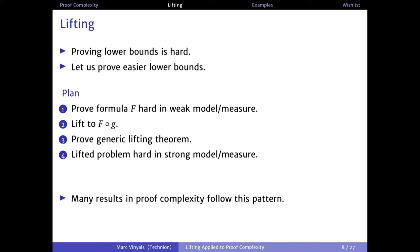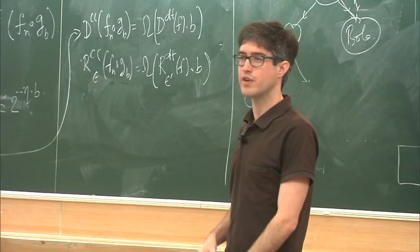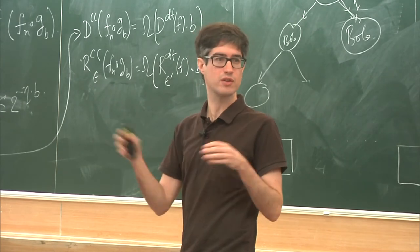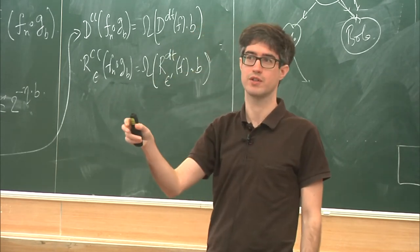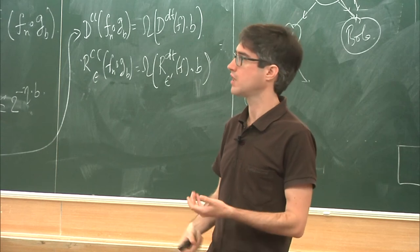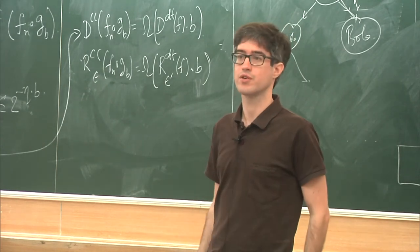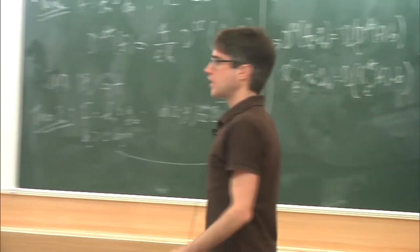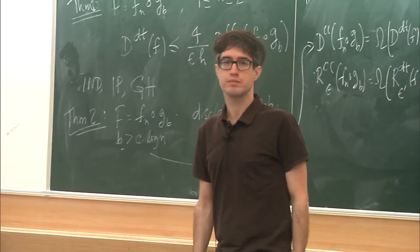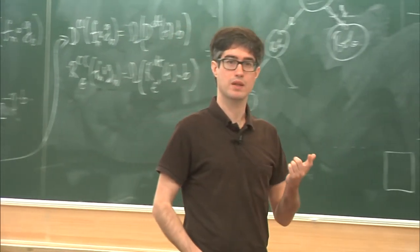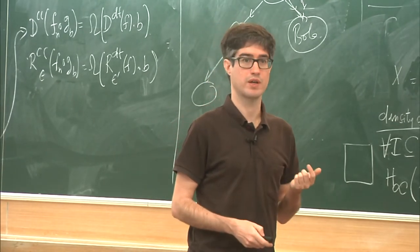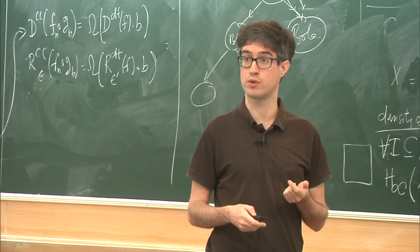Within proof complexity there are many examples following this idea. Often you don't need to prove a hard lifting theorem — your lifting might just be composed with XOR or hit the formula with a random restriction, and you get that the formula is hard for some proof system. Today we'll move to the special case where the lifting theorems go through communication complexity. The idea is to prove that our lifted formula is hard in communication complexity, and then use that hardness in communication to derive hardness in proof complexity.